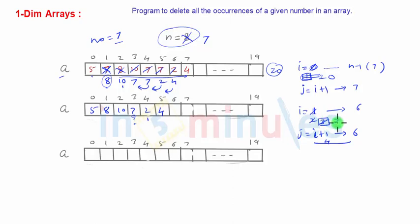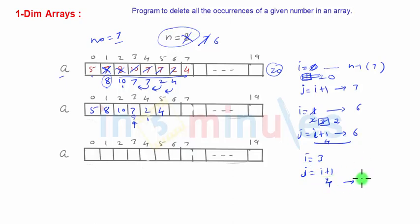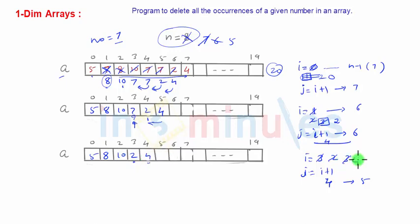So we reduce i by 1 and reduce n by 1 to make it 6, since there are now 6 elements left. The loop proceeds, i becomes 3 again, and we check a[3] — yes, it is our number again. So j is set to i+1 = 4, going up to n minus 1 = 5. Elements at positions 4 and 5 shift left. We reduce i by 1 to 2 and n by 1 to 5. The loop continues: i becomes 3 — not our number; i becomes 4 — not our number; i becomes 5 but the loop stops since i is no longer less than n. Finally, we display the n numbers remaining in the array, a[0] to a[n-1].